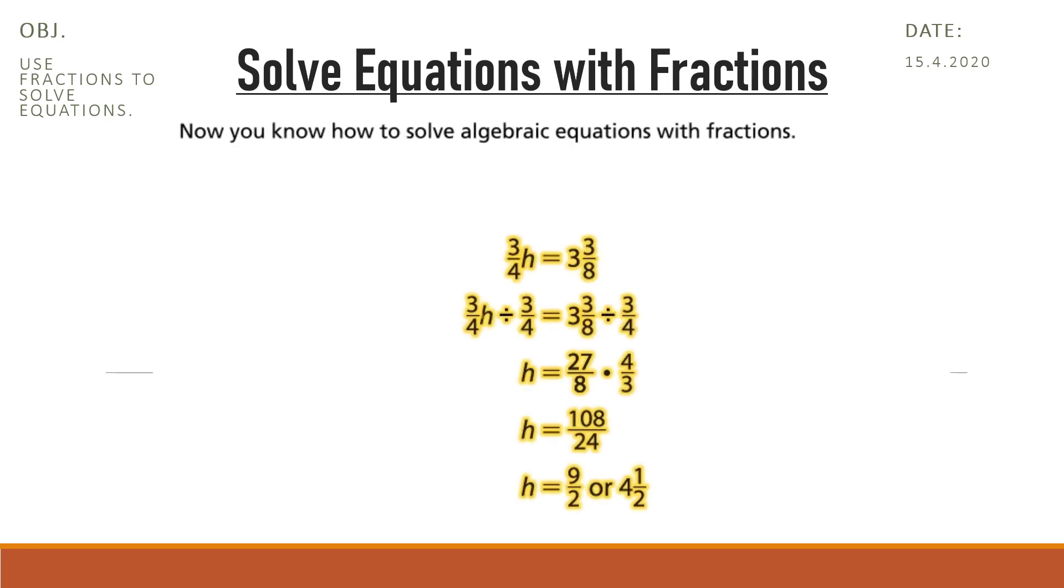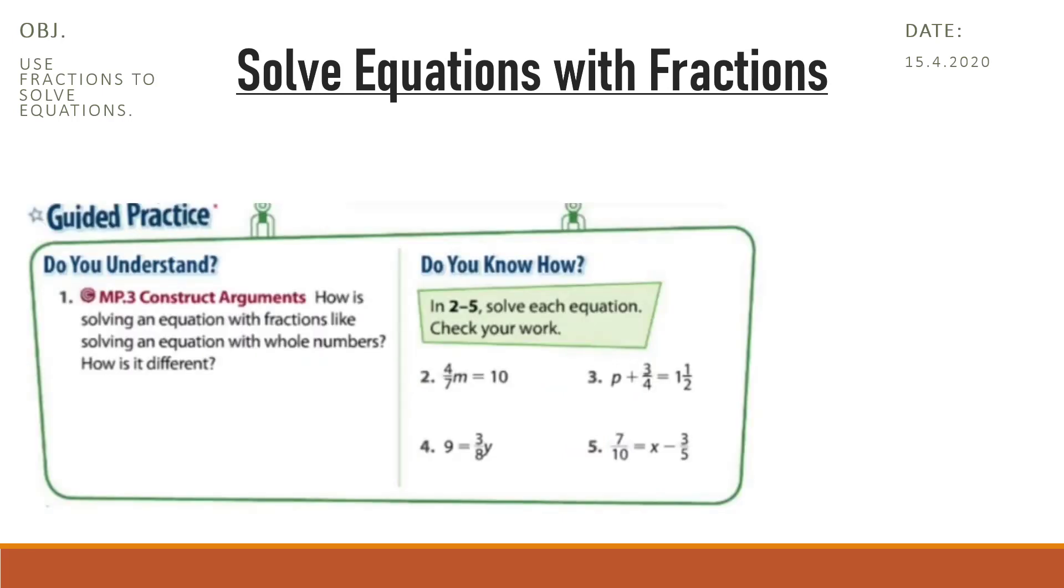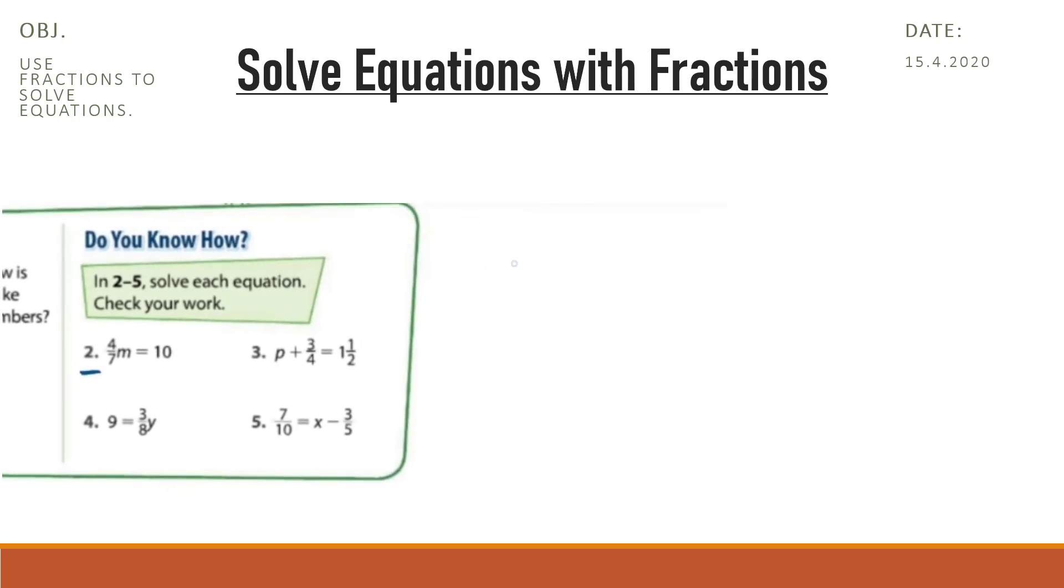Now open your books to page 637. We will solve question number 2. The equation is 4/7M equals 10, and what we need to find is the value of the variable M. To do this, we know that 4/7 is multiplied by M, and the inverse operation of multiplication is division. So we will divide by 4/7. To remove 4/7 from here, we should divide by the same number, 4/7.